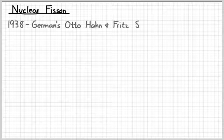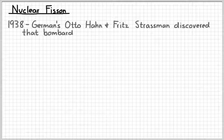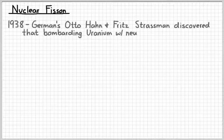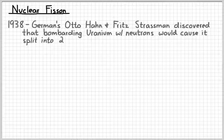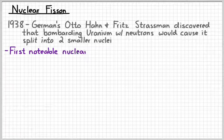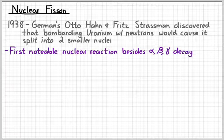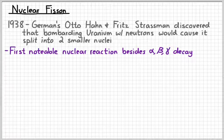Historically speaking, 1938, these two German fellows by the name of Hahn and Strassman discovered something about uranium. They discovered that if you bombarded it with neutrons that it would cause it to split into two smaller nuclei and in the process release a little bit of energy. This was the first notable nuclear process that we discovered besides the natural alpha, beta, and gamma decays.